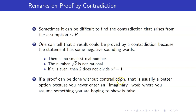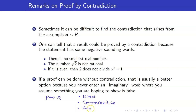However, if a proof can be done without contradiction, that is usually a better option, because you never enter an imaginary world where you assume something you hope is false. Usually when proving an implication P implies Q, try direct proof first. If that is difficult, proceed by contrapositive. The last option is proof by contradiction — it is the best option if you really cannot prove it using direct proof or contrapositive. This concludes our lesson. For our next lesson, we will be discussing proofs involving quantifiers.